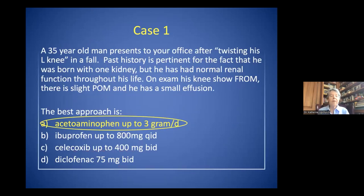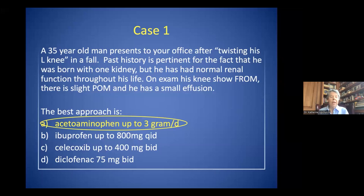So let's go back to case one. The 35-year-old man presents after twisting his knee. Because you took a good past history, you knew he was born with only one kidney, even though he had normal renal function. It would definitely not be in his best interest to use an anti-inflammatory drug because of the propensity for renal issues, which could have catastrophic consequences since he doesn't have the usual reserve. Therefore, acetaminophen to achieve adequate pain control is the appropriate best approach, and anti-inflammatory drugs should be completely avoided.